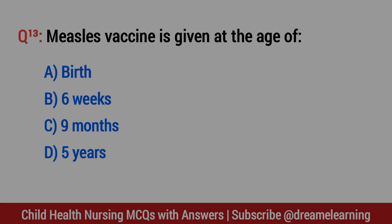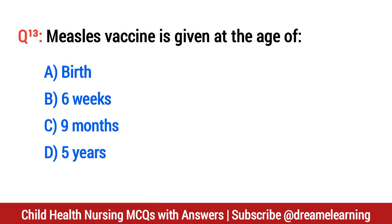Question number 13. Measles vaccine is given at the age of? The right option is C: 9 months.